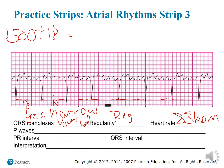Are there any P waves? None that we can distinguish — so N/A. And we can already put N/A for PR interval as well. Let's figure out our QRS — from here to here, that's 2 boxes. So 2 times 0.04 equals 0.08 seconds.